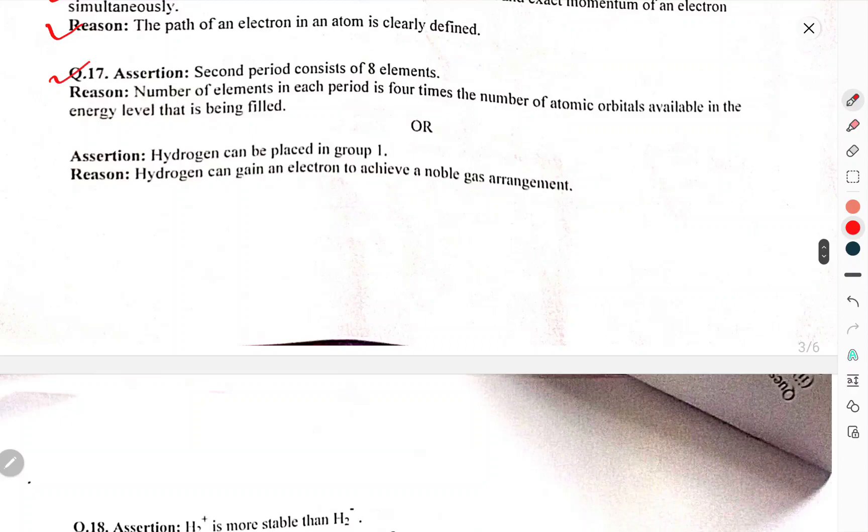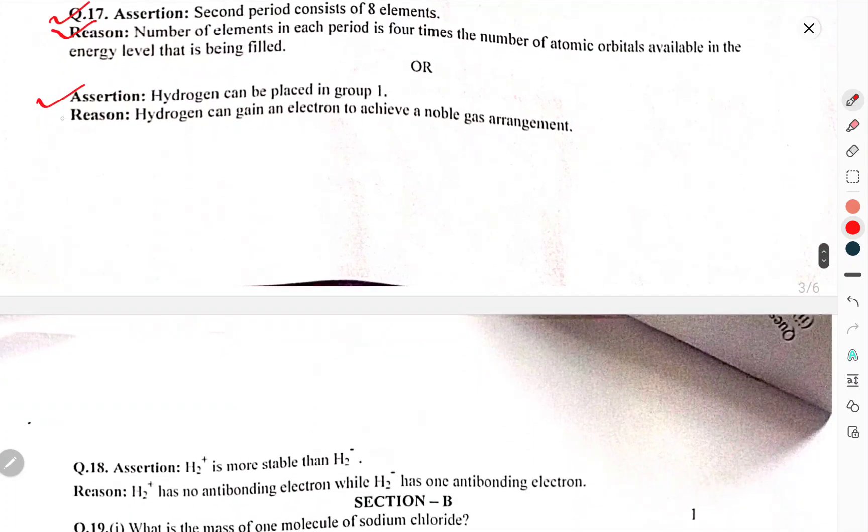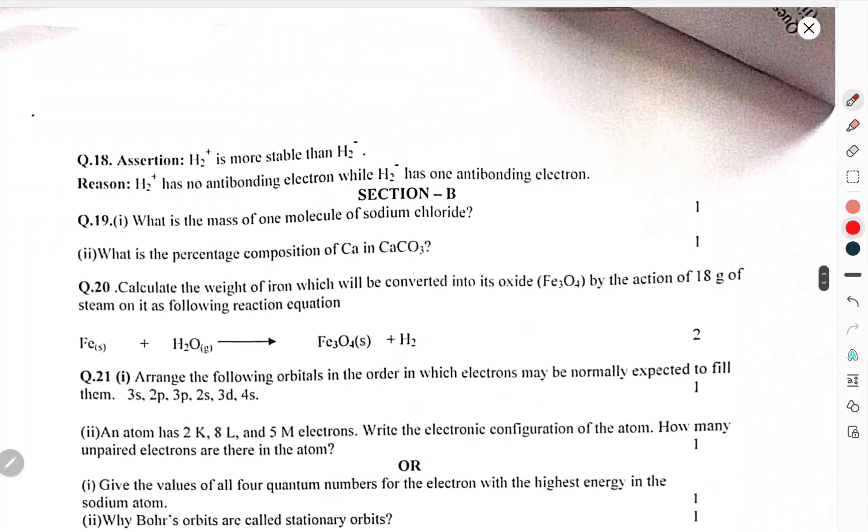Assertion: Second period consists of eight elements. Reason: Number of elements in each period is four times the number of atomic orbitals available in the energy level that is being filled. Assertion: Hydrogen can be placed in group 1. Reason: Hydrogen can gain an electron to achieve the noble gas arrangement. Assertion: H2+ is more stable compared to H2-. Reason: H2+ has no antibonding electron, H2- has antibonding electron.